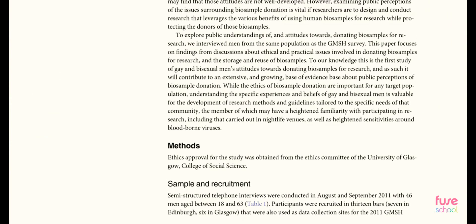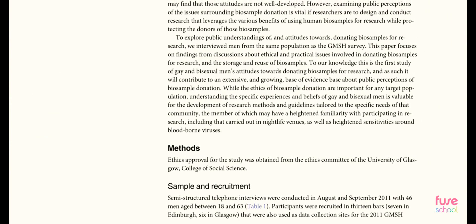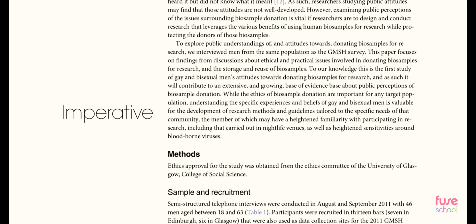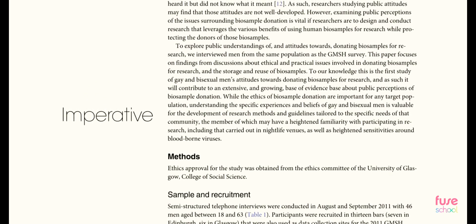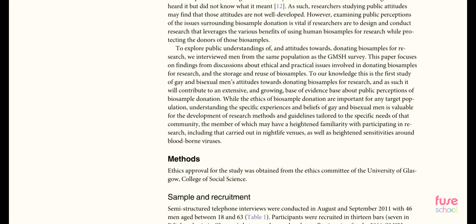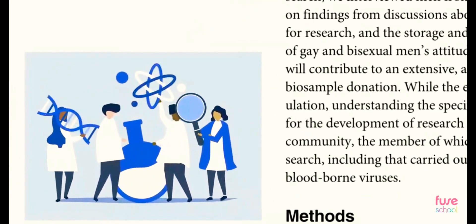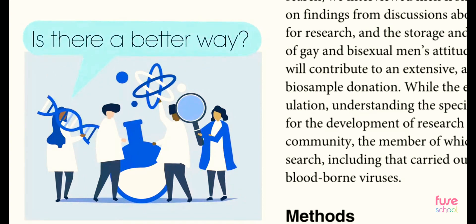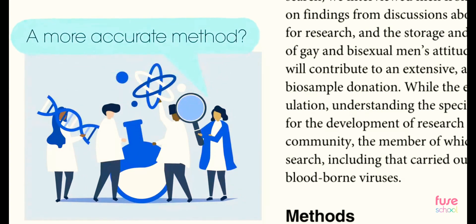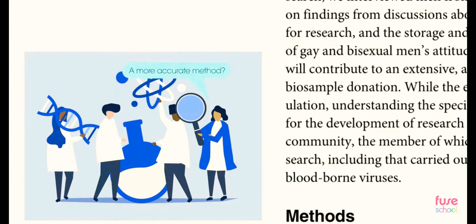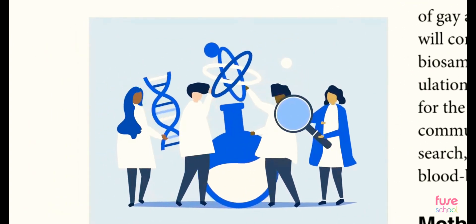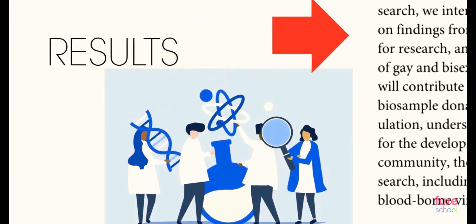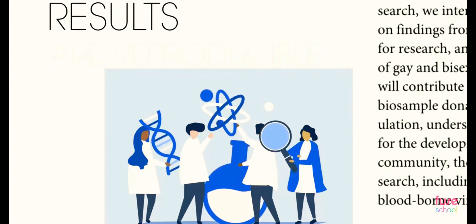Method. This is described in enough detail so someone could repeat the same procedure. The method is always written in the imperative, as are any instructions. It's important to allow other scientists to critique the method — for example, is there a better way the investigation could have been carried out? Could a more accurate method have been used? It also allows other scientists to carry out the experiment and compare their results. If they achieve similar results, we say the results are reproducible.